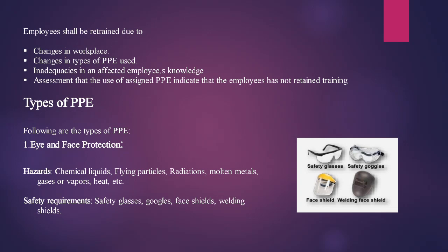The types of personal protective equipment: Number one is eyes and face protection. Hazards that require eye and face protection include chemical liquids, flying particles, radiation, molten metal, gases or vapors, and heat. Safety equipment used includes safety glasses, goggles, face shields, and welding shields.